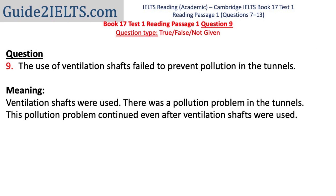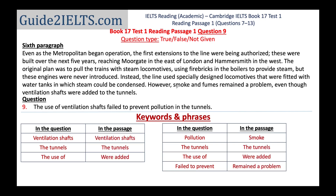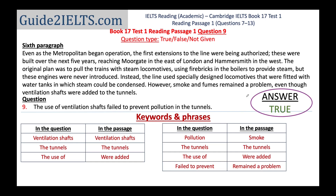Understanding the ninth question: ventilation shafts were used, there was pollution in the tunnels, and even after the ventilation shafts were added, the pollution remained. Reading the passage: 'However, smoke and fumes remained a problem even though ventilation shafts were added to the tunnels.' Smoke and fumes means pollution. So the passage confirms that ventilation shafts were added to the tunnels, but pollution remained a problem. The answer is true.